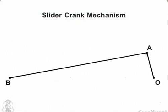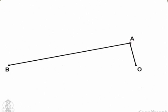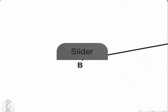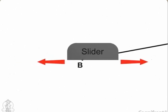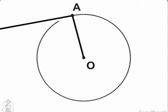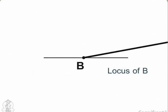The slider crank mechanism is explained as follows. The end A of the connecting rod AB is connected to the crank OA which rotates about O. The other end B is attached to a slider which slides along a straight line. The locus of A will be a circle and that of the end B will be a straight line.